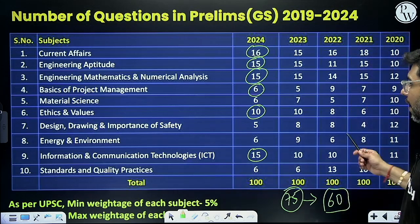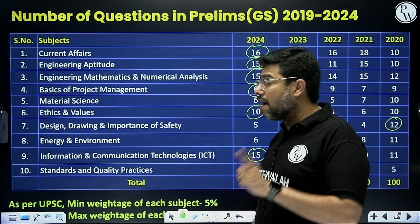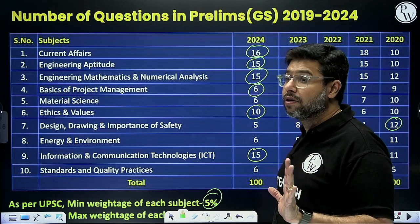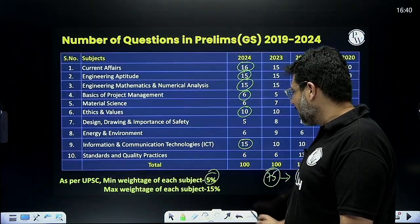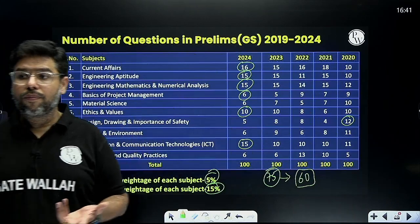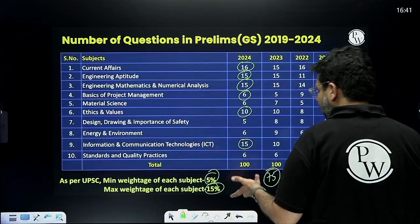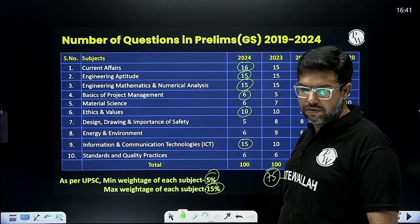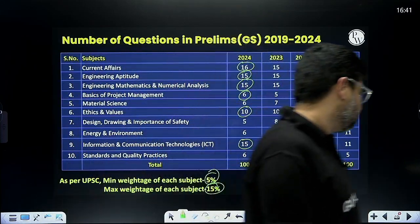One important thing to note: as per UPSC, every subject will carry at least 5% weightage and a maximum of 15%. So no subject can carry more than 15% marks. There can be some exceptions — like last year current affairs had more than 15% questions — but the rough range given is minimum 5% and maximum 15% per subject.